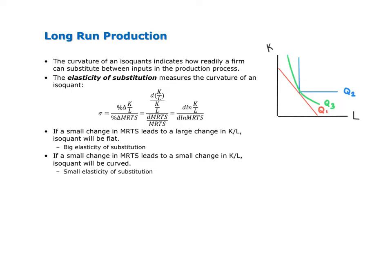Again, the curvature of an isoquant reflects the substitutability of inputs. The elasticity of substitution measures this curvature as well as input substitutability. Like any elasticity, elasticity of substitution is the percentage change in one thing divided by the percentage change in another — here, it's the percentage change in the capital-to-labor ratio for a given percentage change in the MRTS.